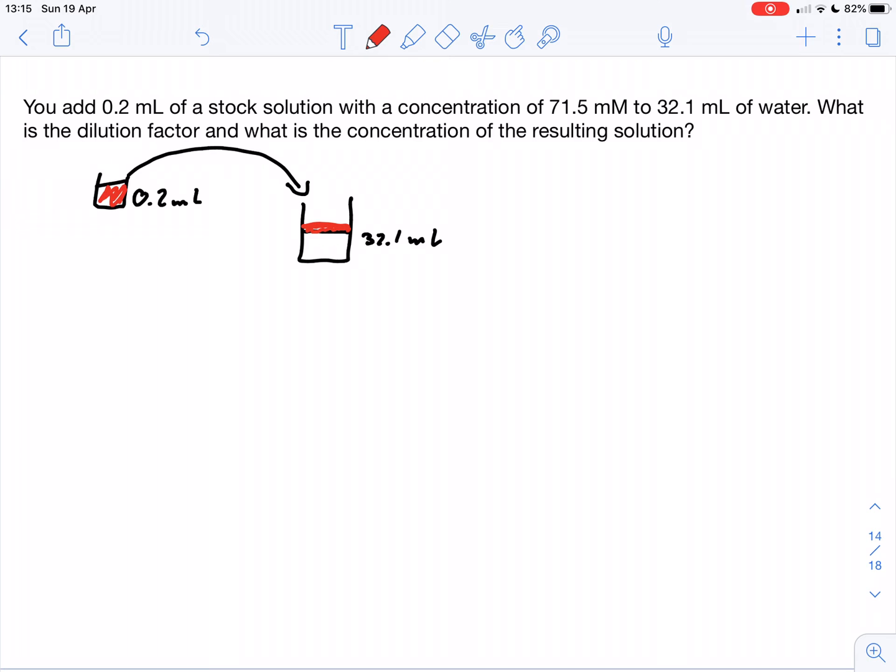So what we can say in terms of dilution factor is we now have a total volume of 0.2 milliliter plus 32.1 milliliter, which of course gives us 32.3 milliliter. That's our total volume.